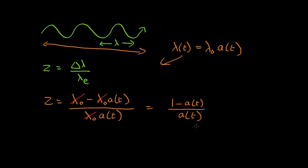We can rearrange that, multiply both sides by a(t), and we get z times a(t) equals 1 minus a(t).